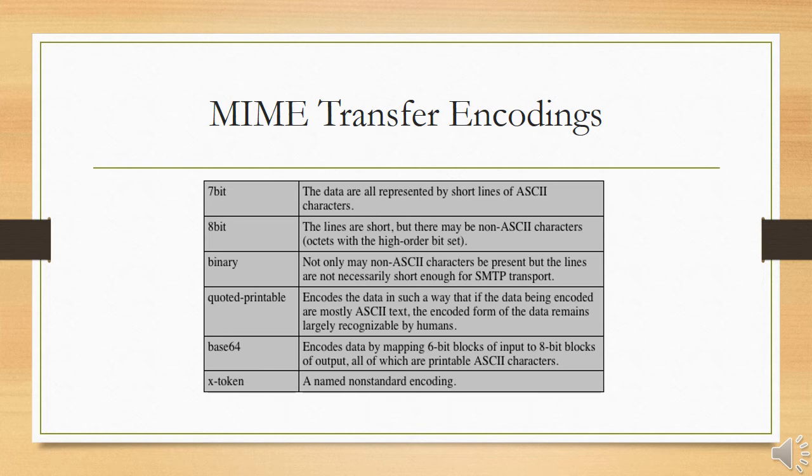Another content transfer encoding value is X-token, which indicates that some other encoding scheme is used for which a name is to be supplied. This could be a vendor-specific or application-specific scheme. The two actual encoding schemes defined are quoted-printable and base64.